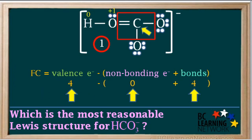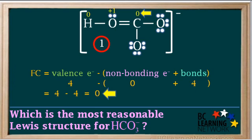A carbon atom has 4 valence electrons, and the atom here has no non-bonding electrons around it and a total of 4 bonds attached to it. So its formal charge is 4 minus 4 which is equal to 0.